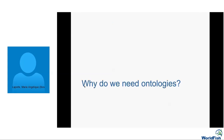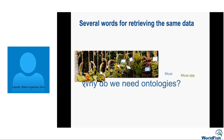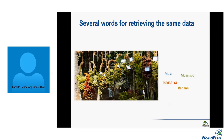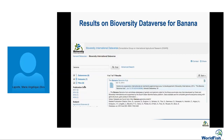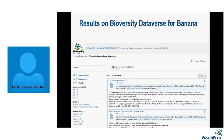First, why do we need ontologies? I'll take two examples. The first: I'm a scientist and I want to search for data. There are several words that can be used to find data depending on my background — whether I'm a taxonomist, a scientist, or a normal citizen. Here is an example on the Bioversity Dataverse where I use several keywords to find data and the results are different.